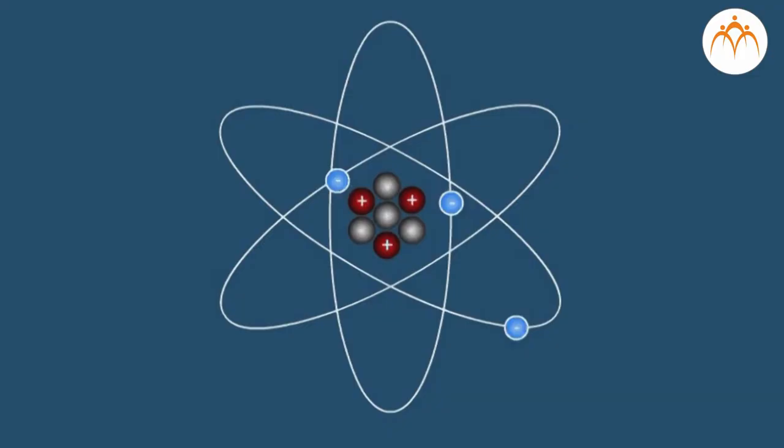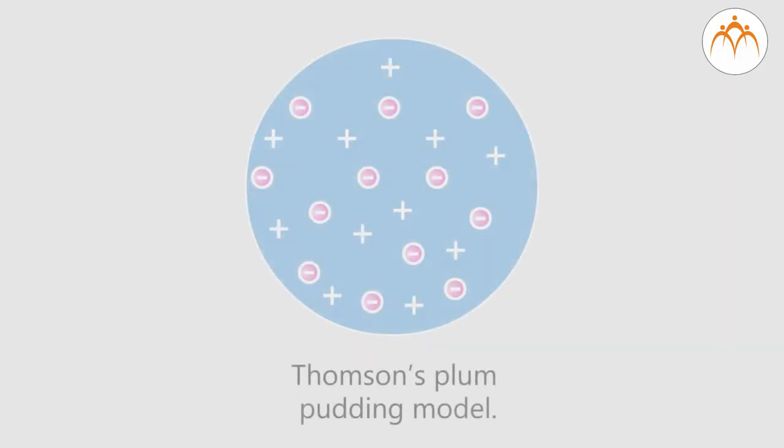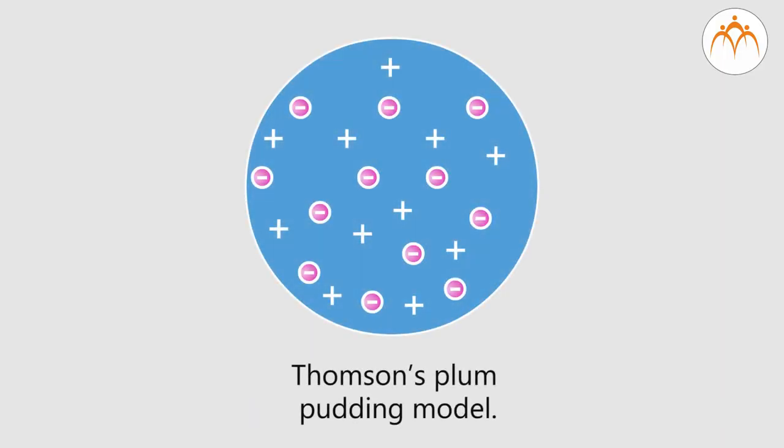In the previous video we learned about Rutherford's nuclear model. Thomson gave the name electron to negatively charged particles and proton to the positively charged particles.